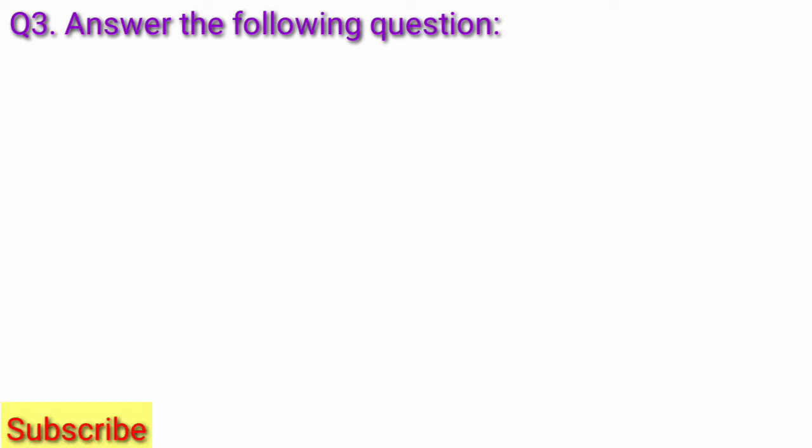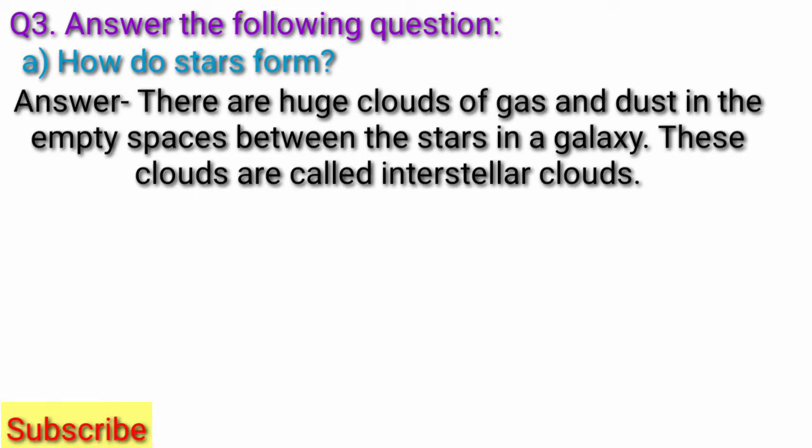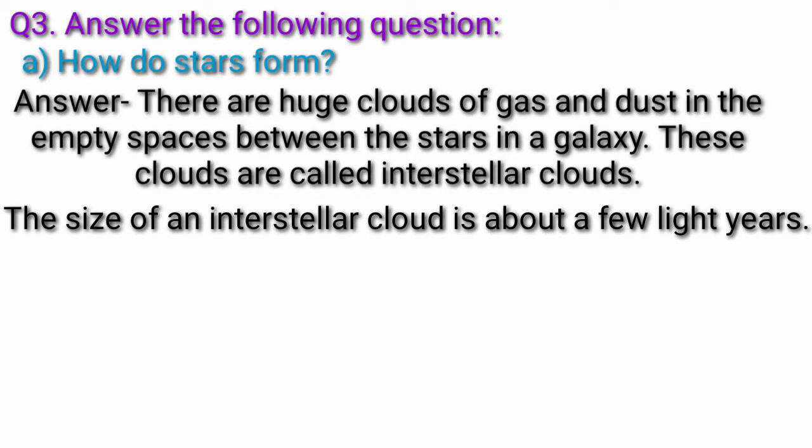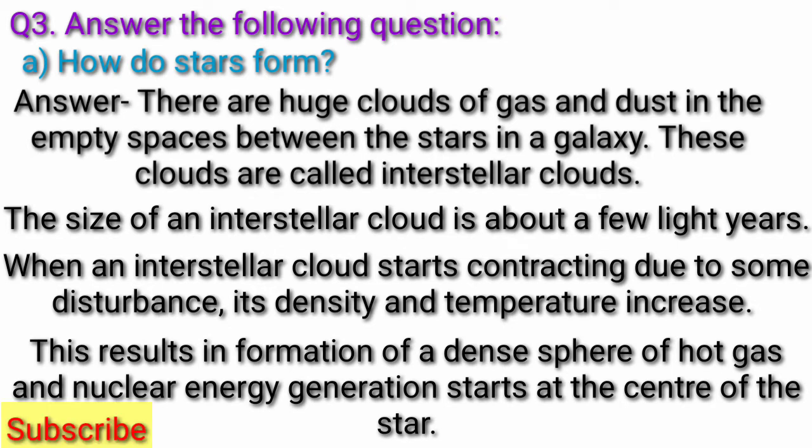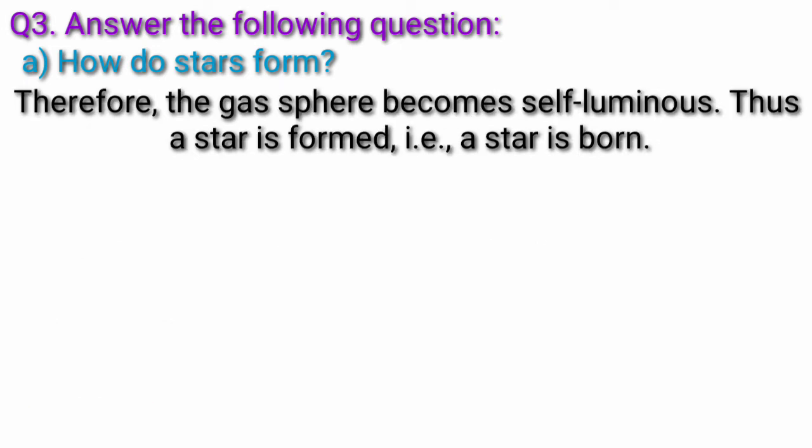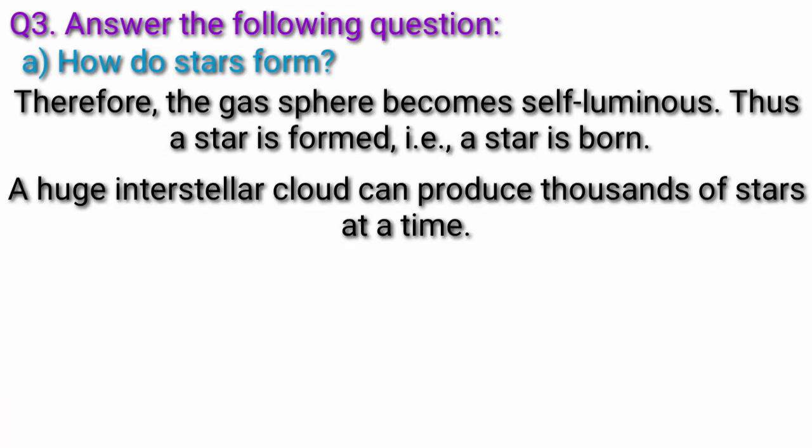Question 3, answer the following question. Question A, how do stars form? Answer, there are huge clouds of gas and dust in the empty spaces between the stars in a galaxy. These clouds are called interstellar clouds. The size of an interstellar cloud is about a few light years. When an interstellar cloud starts contracting due to some disturbance, its density and temperature increase. This results in formation of a dense sphere of hot gas and nuclear energy generation starts at the center of the star. Therefore, the gas sphere becomes self-luminous. Thus, a star is formed. That is, a star is born. A huge interstellar cloud can produce thousands of stars at a time.